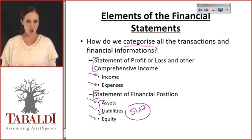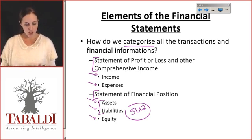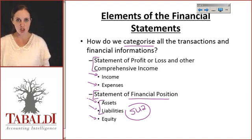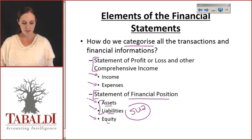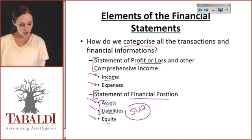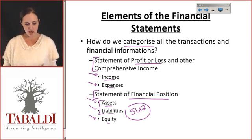We've already looked at an example of what your statement of financial position looks like. So whenever we're talking about financial position, we talk about assets, liabilities, and equity. And when we're talking about profit or loss, we're talking about income and expenses.